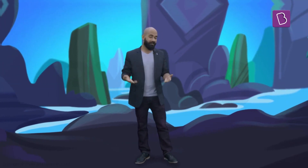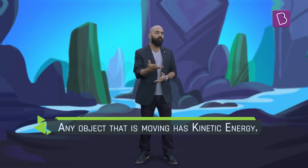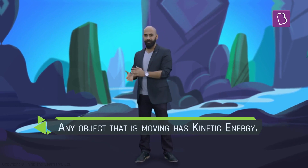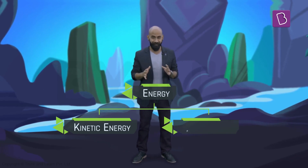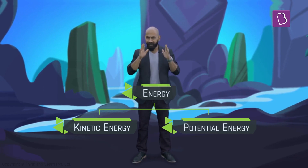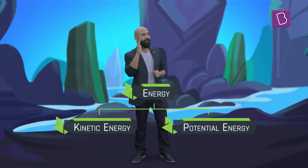Therefore, any object that is moving has the ability or the capacity to do work, and therefore it has energy — more specifically, kinetic energy. So any object that is moving has kinetic energy. Now let's talk about another type of energy called potential energy, which is slightly more confusing, so pay attention.